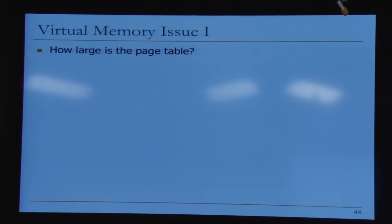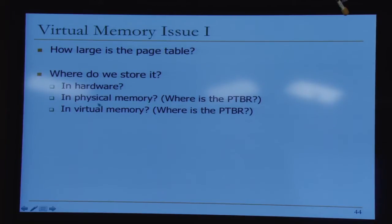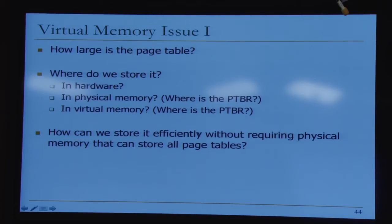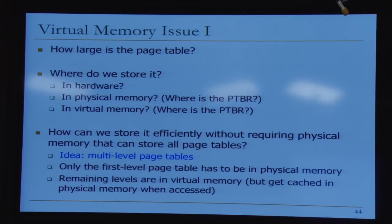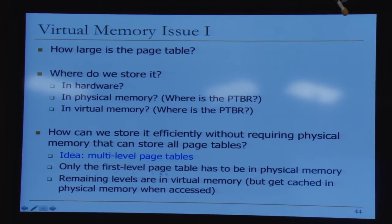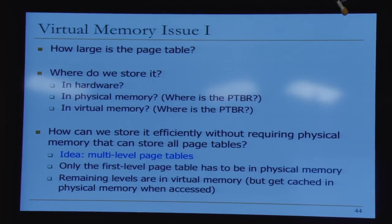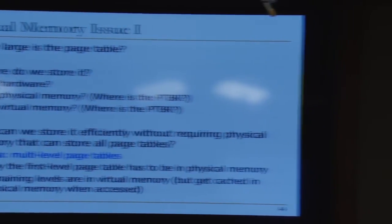How large is the page table? With a 64-bit virtual address space, a 40-bit physical address space, and 4KB pages (12-bit offset), you need 2^52 page table entries per process, each with a 28-bit physical frame number. That's enormous. The solution is multi-level page tables: instead of one large page table, use a hierarchy where only the first-level page table must be in physical memory (and is kept relatively small), while remaining levels can be in virtual memory.